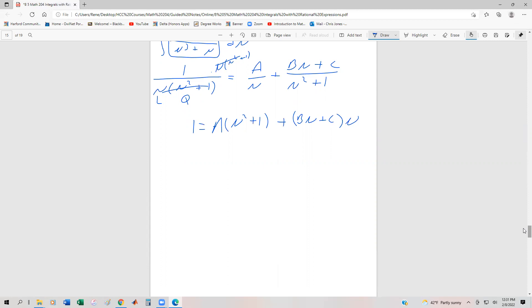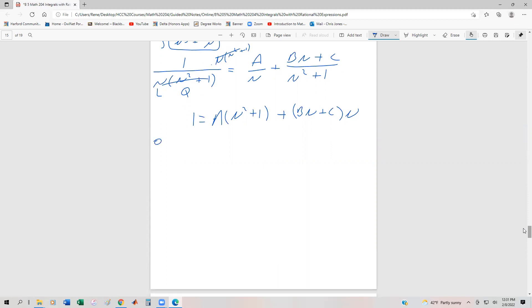but we could just go ahead and find them all at one point. So by distributing and also filling in missing powers of u squared and u, we get 0u² + u + 1 equals Au² + A + Bu² + Cu.